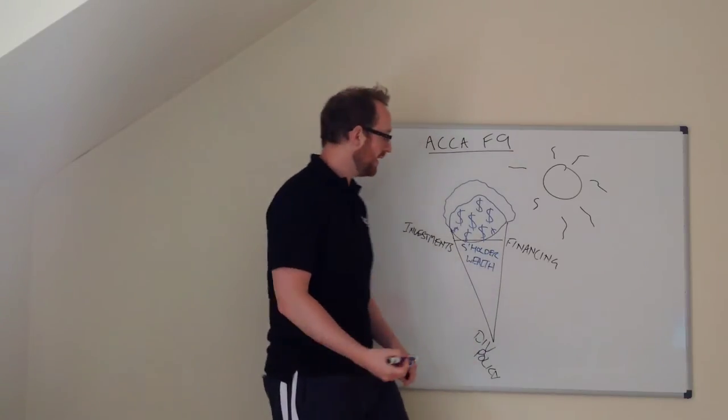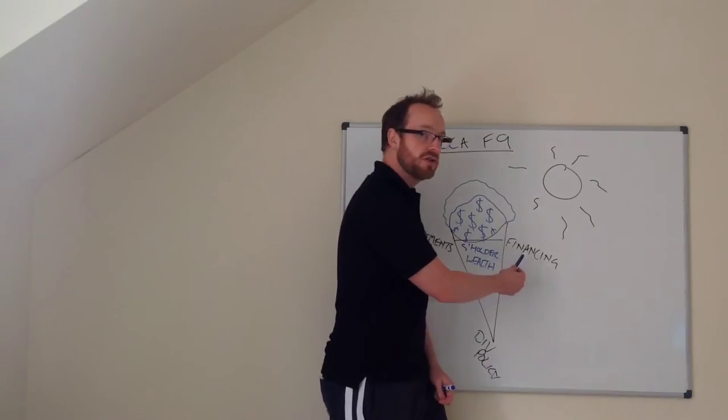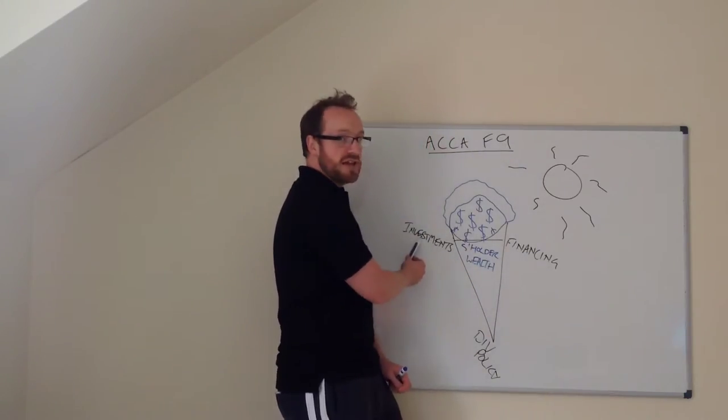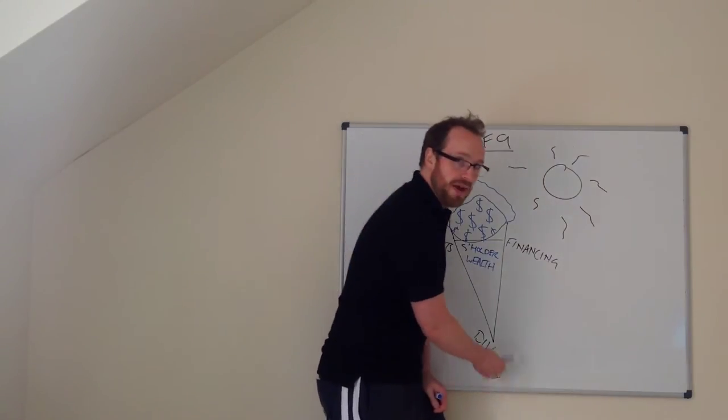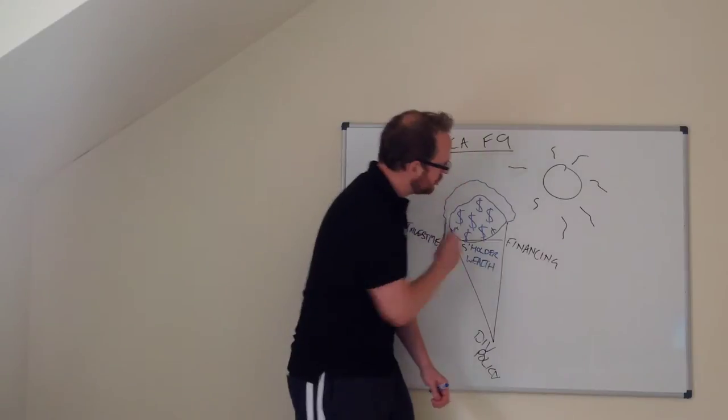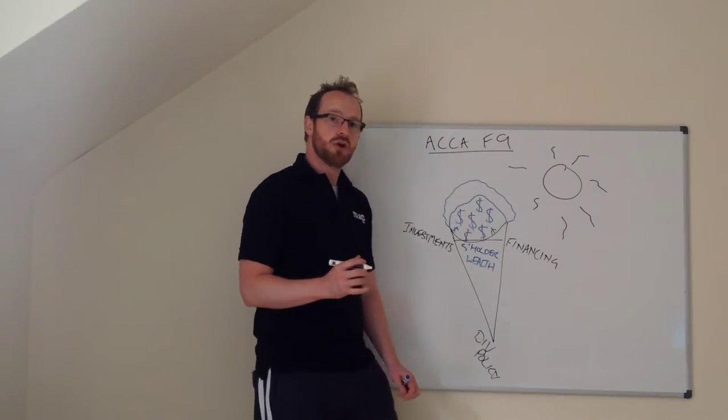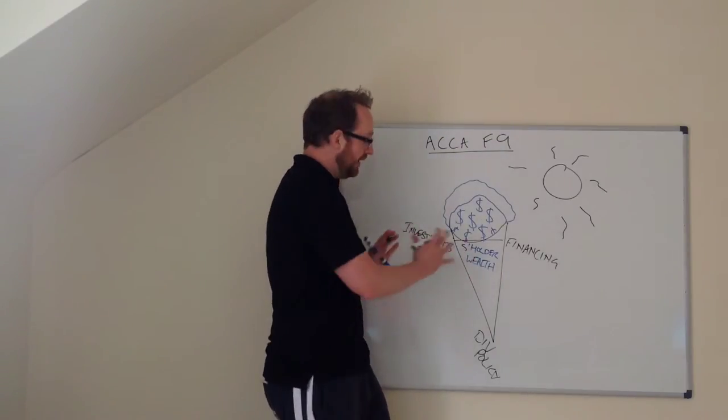Why are they interlinked? Well because you can't make investments unless you've got the financing to do it. You can't pay out a dividend unless you've had successful investments. You have to decide whether or not to pay a dividend or should you use some of the money for your financing purposes. So that's the core of F9. That's it. It's all interlinked.